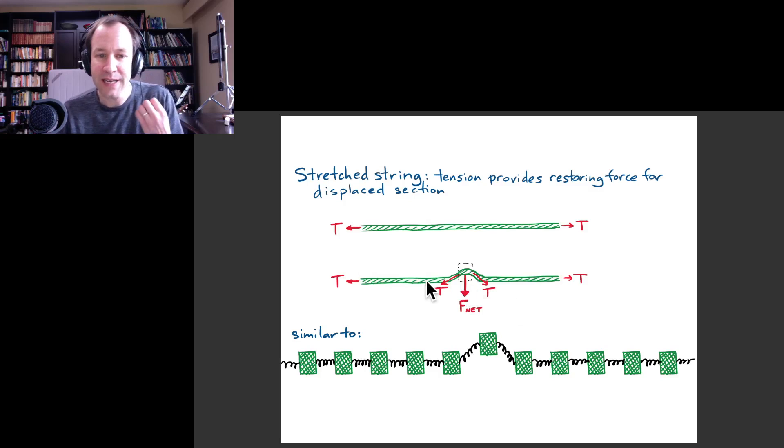So the way to understand how each part of the string is like an oscillator is just to imagine displacing this one part upward a little bit. Then what you see is that the part that I've circled or put inside the square has a certain mass, and when I displace it, there's a certain restoring force acting on it.